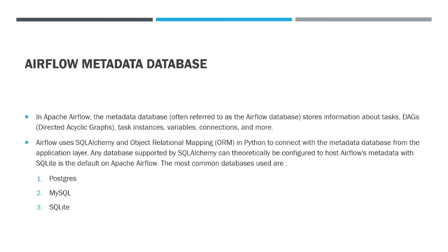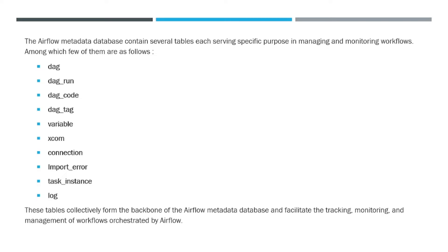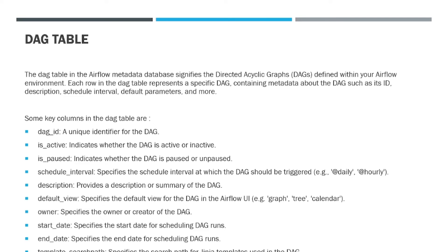Now let's view each table one by one. The airflow metadata database contains several tables, each serving a purpose in managing and monitoring workflows. Among them, the key ones are: dag, dag_run, dag_code, dag_tag, variable, xcom, connection, import_error, task_instance, and log. These tables collectively form the backbone of the airflow metadata database and facilitate the tracking, monitoring, and management of workflows orchestrated by Airflow. Let's look at each table one by one. First is the dag table.